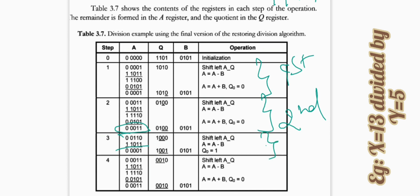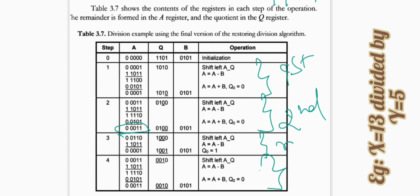In the fourth cycle, we again shift the Q value left. After shifting we get triple 0, 1, 1. We perform A minus B and the result is four ones then zero, meaning A is negative. So we set Q0 to 0 and perform A plus B to restore. This completes the fourth and final cycle since all 4 cycles are now done.